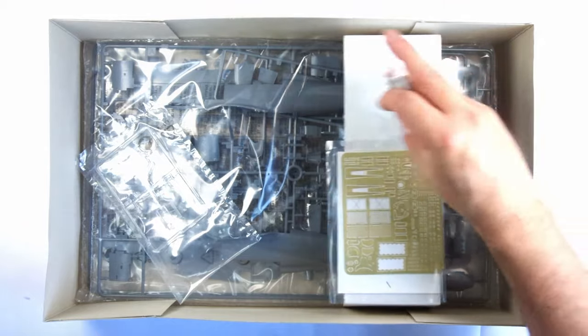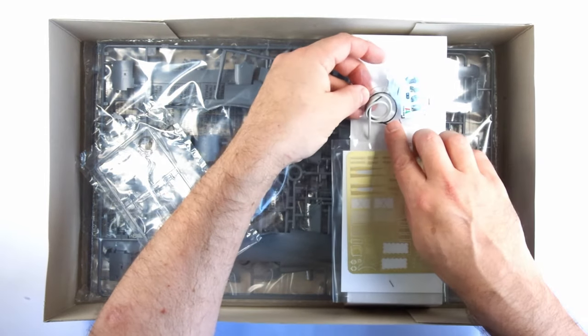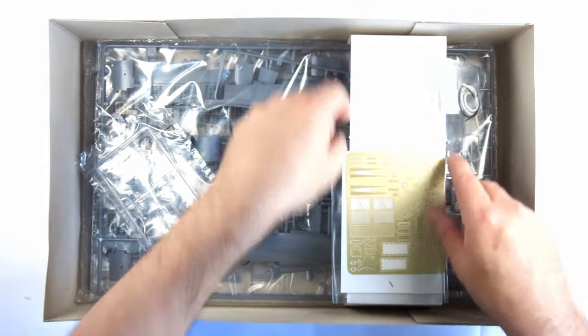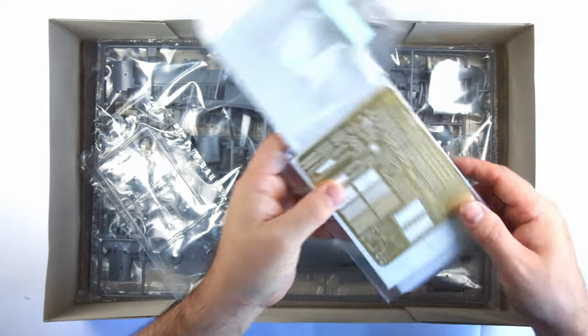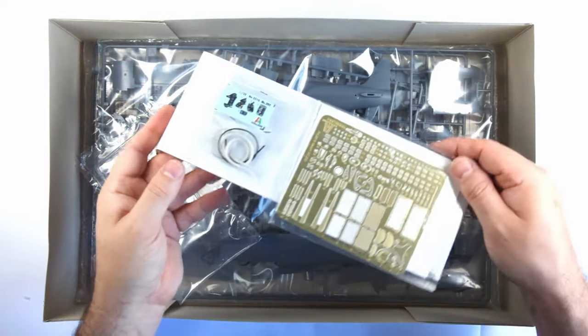A small bag of tubing and other bits, as well as the photo-etch sheet are both attached to a thick card bridge to protect them, though that can be taken out to reveal the plastic underneath.